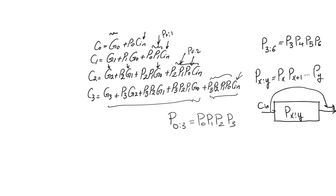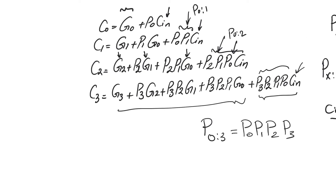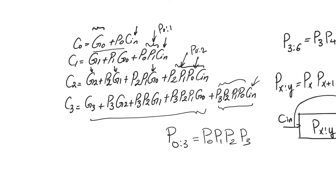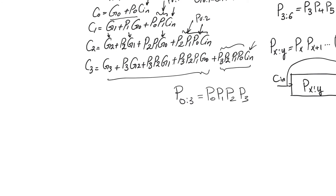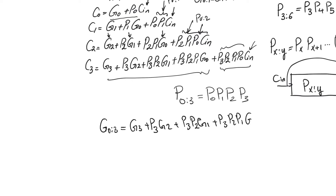Group generate is a little harder to understand. For bit position c0 we only have g0. For bit position one, we have two terms giving us the group generate for the range from 0 to 1. The group propagate P(0 to 1) we already know; the group generate G(0 to 1) is g1 plus p1·g0. The group generate is the remainder term outside the group propagate term. The most complex is G(0 to 3) for c3, which equals g3 + p3·g2 + p3·p2·g1 + p3·p2·p1·g0.